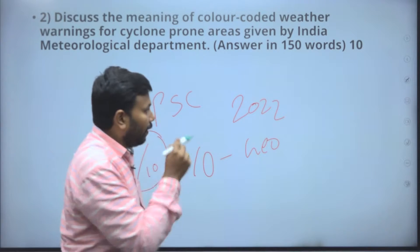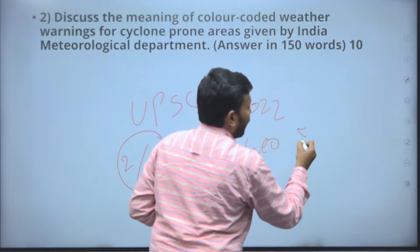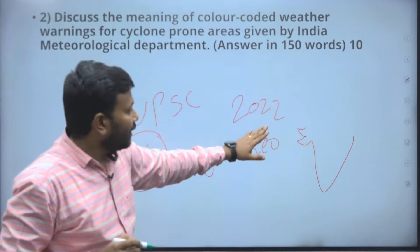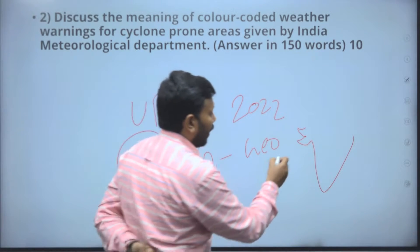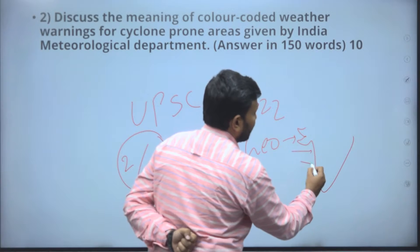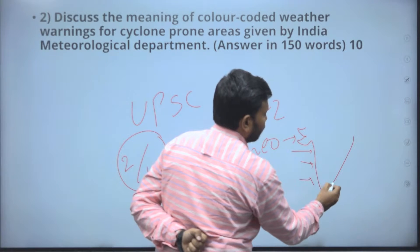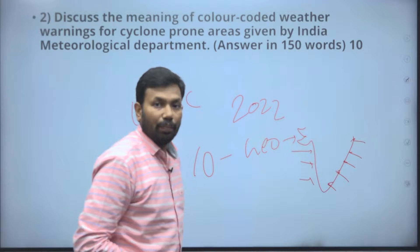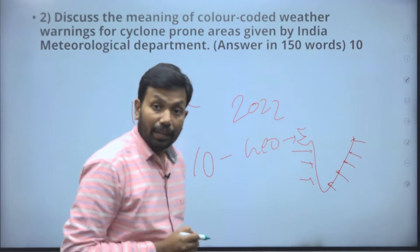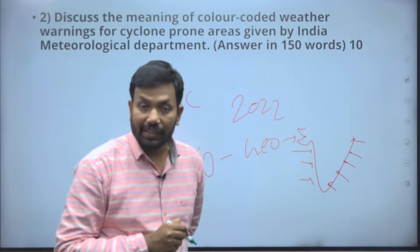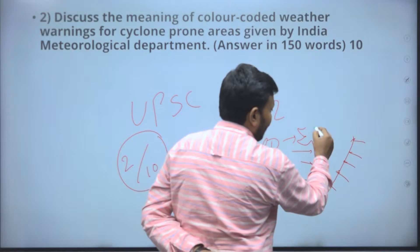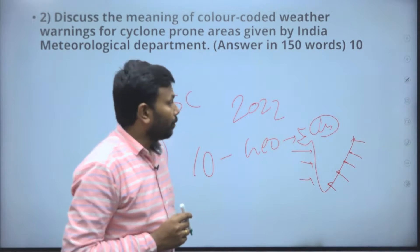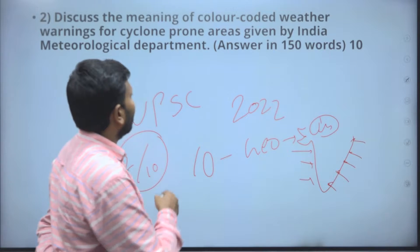Immediately, you have to draw an India map — at least the southern side — and highlight which areas are prone to cyclones. This includes tropical and temperate cyclone-prone areas. This diagram carries at least one mark, so it is a mandatory diagram in your answer.